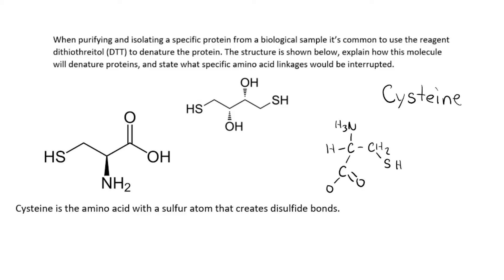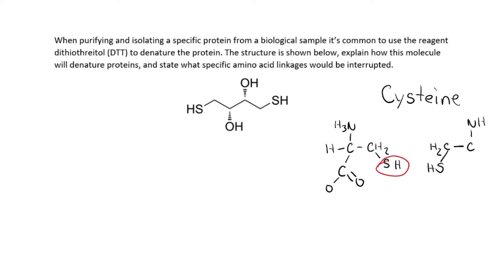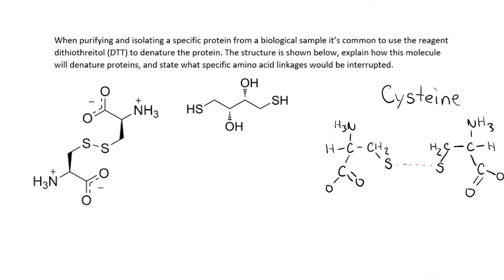Here is the sulfur needed to create a disulfide bond. A disulfide bond is when two cysteines come together — each sulfur loses its hydrogen — and they are oxidized and create a bond with each other. That is a disulfide bond.